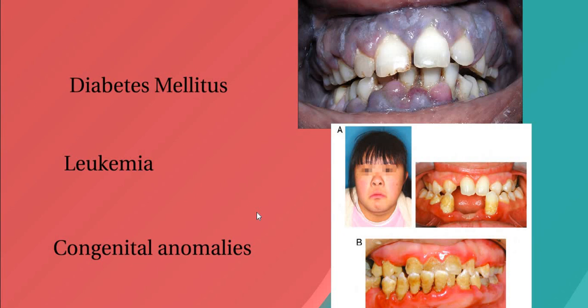One of the systemic diseases that are very important to consider is diabetes mellitus. Type 1, which is insulin dependent, is more common in children and young adults than type 2 or non-insulin dependent. As in diabetic adults, gingival inflammation and periodontitis are more prevalent in affected children than unaffected ones. Clinical consequences include premature tooth loss and impaired immune response to the oral flora. The severity of periodontal disease is worse in children with poor metabolic control or uncontrolled diabetes.